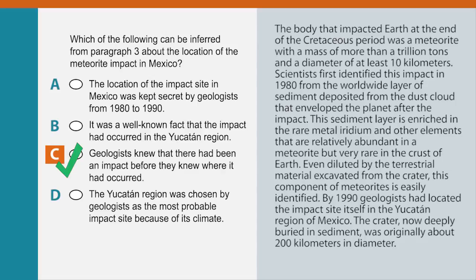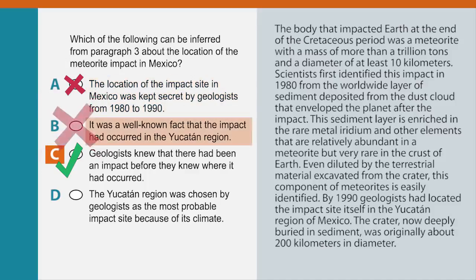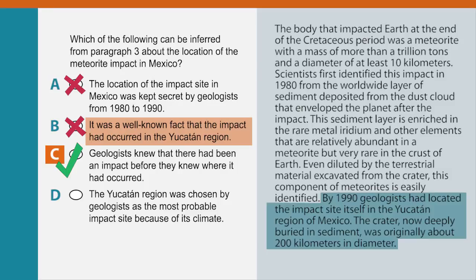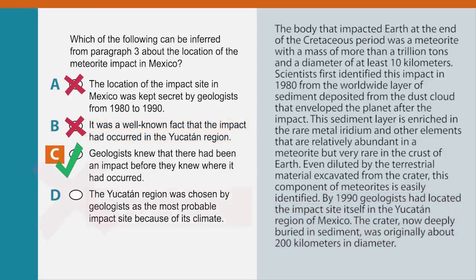Let's look at why the other choices can be eliminated. Choice A is not correct, because there isn't anything written or implied in the passage about geologists keeping the impact site secret. Choice B is also not correct — saying that it was a well-known fact contradicts the passage where it talks about the discovery of the crater in the Yucatan. Choice D also can't be correct, because the paragraph doesn't mention climate as a factor in the discovery of the impact site.